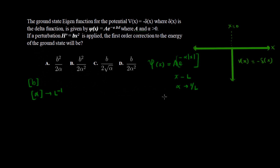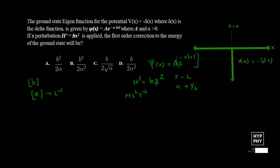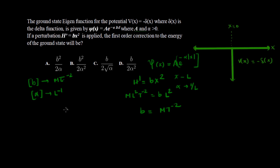Next we find the dimension of B. The perturbation Hamiltonian H' = Bx² has the form of energy, so it must have dimension ML²T⁻². Since X² has dimension L², B must have dimension MT⁻². So we have all required dimensions: B ~ MT⁻² and α ~ L⁻¹.